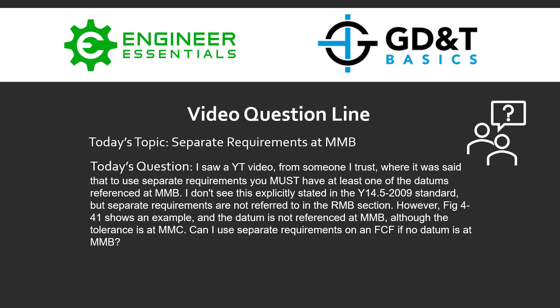I don't see this explicitly stated in the ASME Y14.5-2009 standard. Separate requirements are not referred to in the RMB section; however, figure 4-41 shows an example where the datum is not referenced at MMB, although the tolerance is at MMC. So can I use separate requirements on a feature control frame if no datum is listed at MMB?